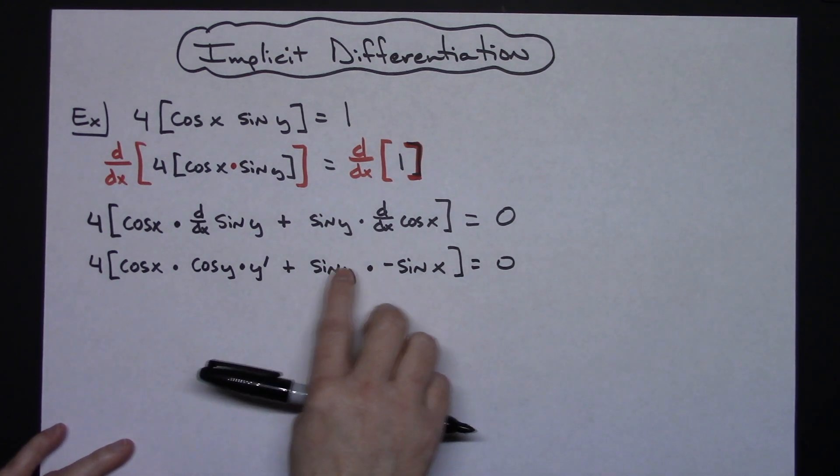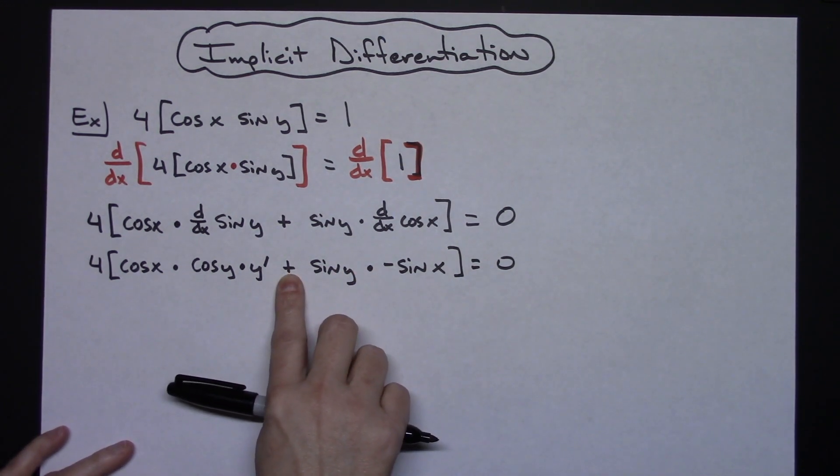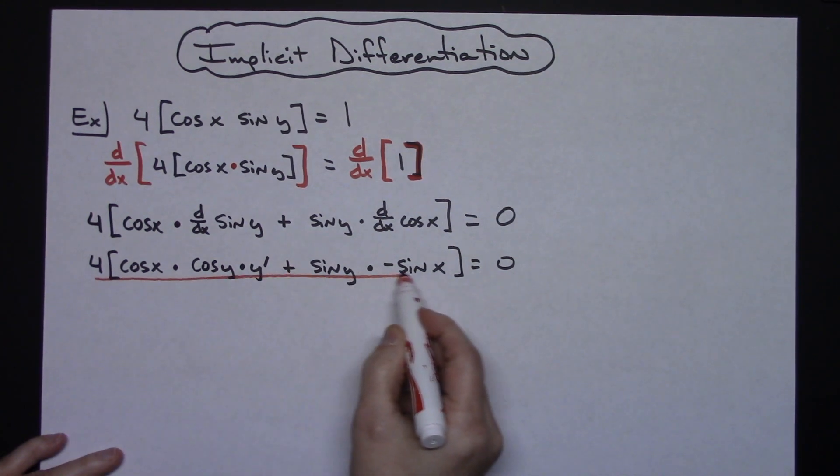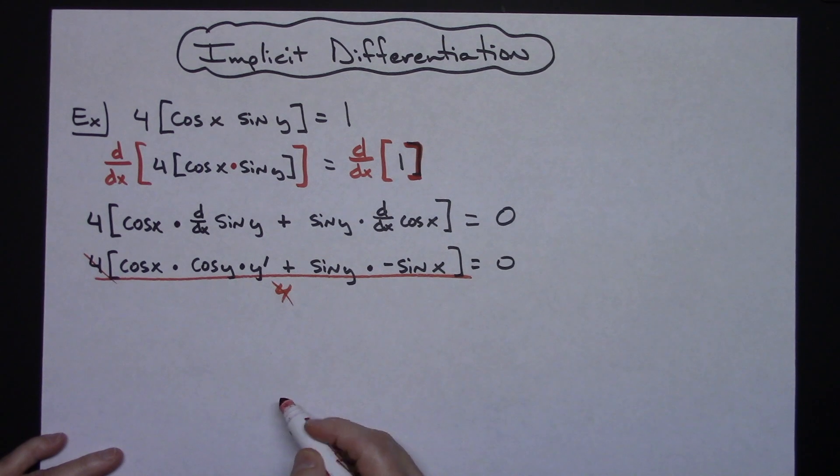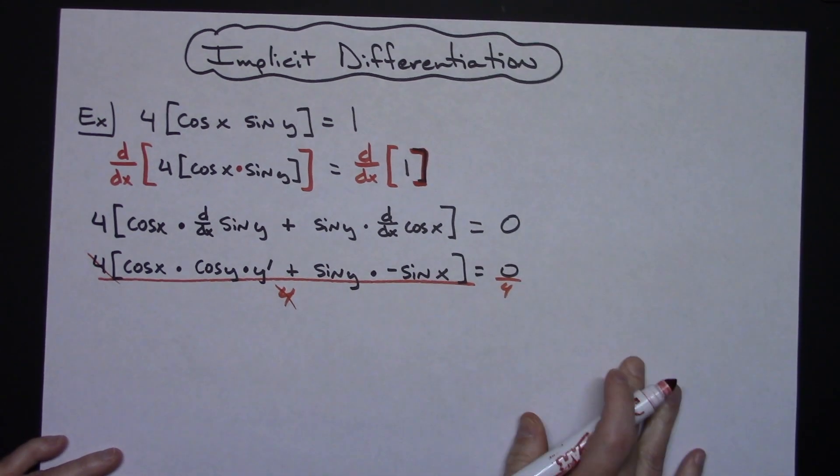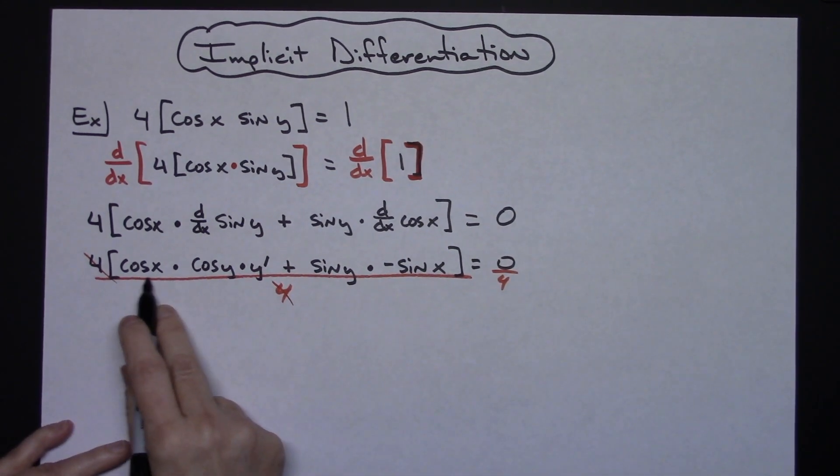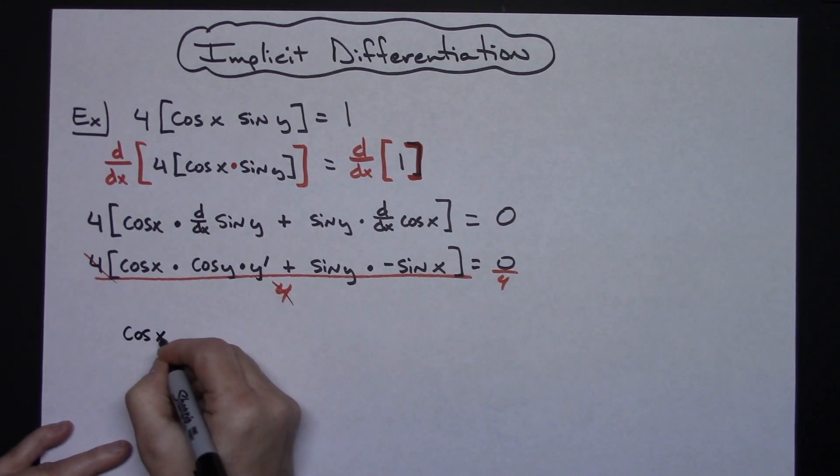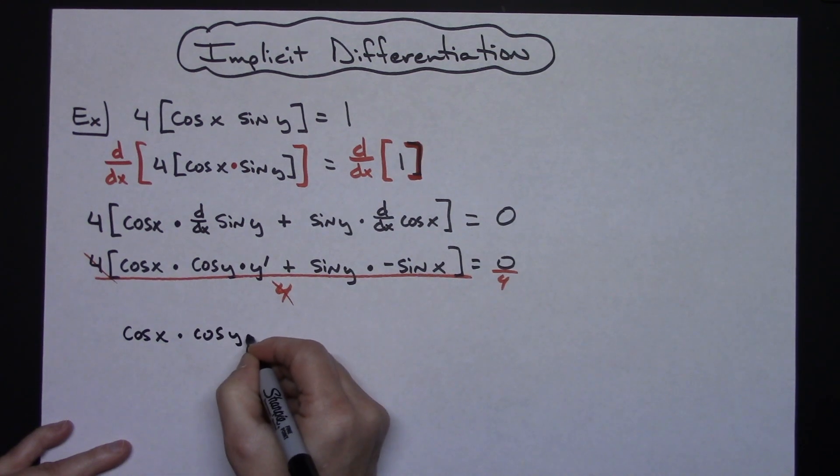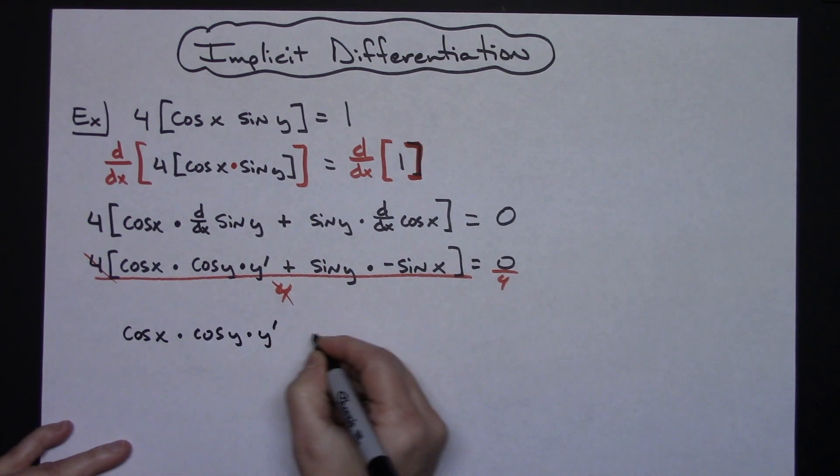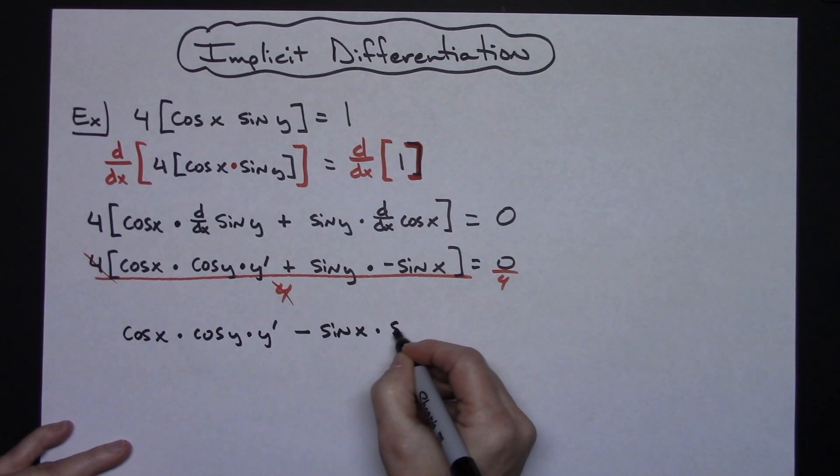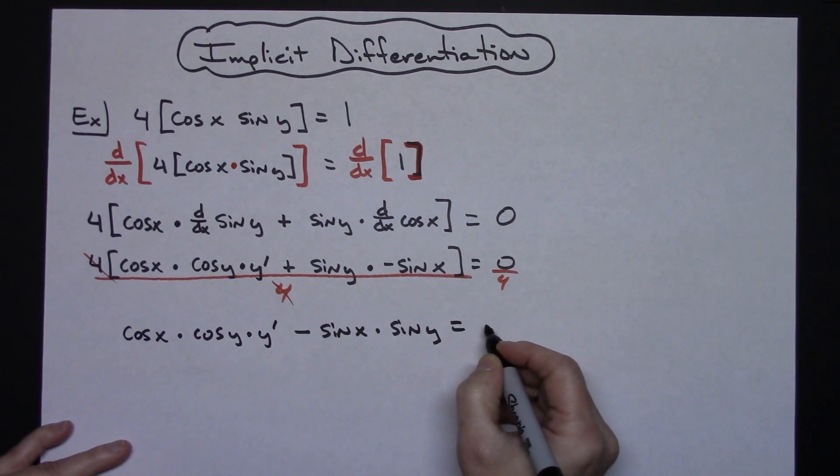Okay at this point you could do a little bit of cleaning up here. Let's go ahead and divide both sides by four and clean up all in the same thing. So if I've got that four sitting out there I don't want that four sitting out there anymore so let's divide by four which is going to allow me to cross it out here, dividing over there by four is just going to give me a zero. So let's clean this up a little bit. Let's go cosine x times cosine y, leave the y prime there, let's just make that a minus sine x times sine y. Is equal to zero.